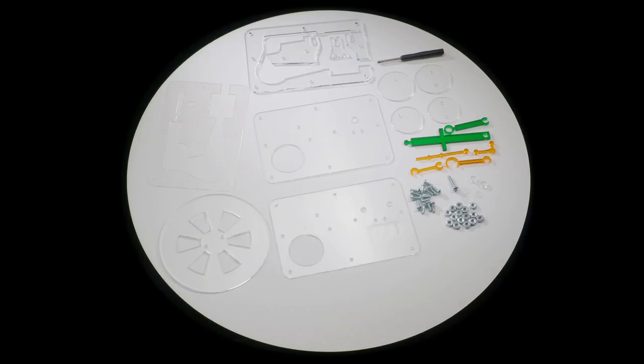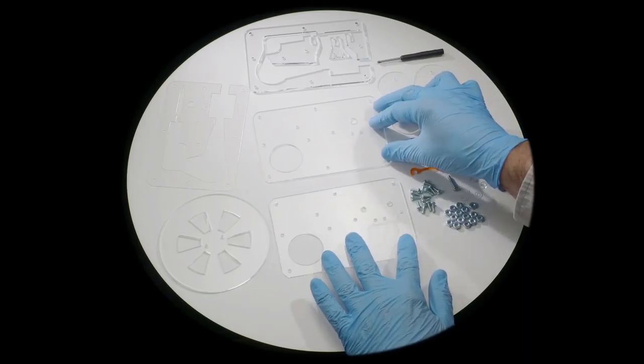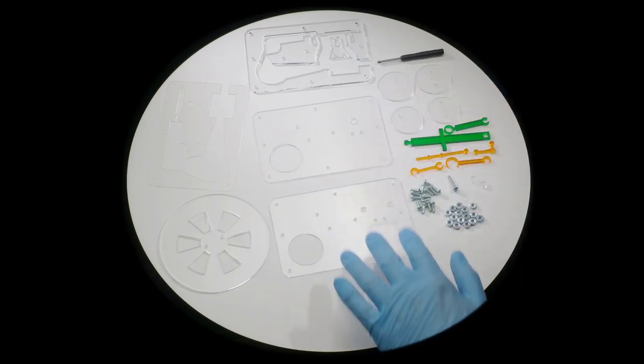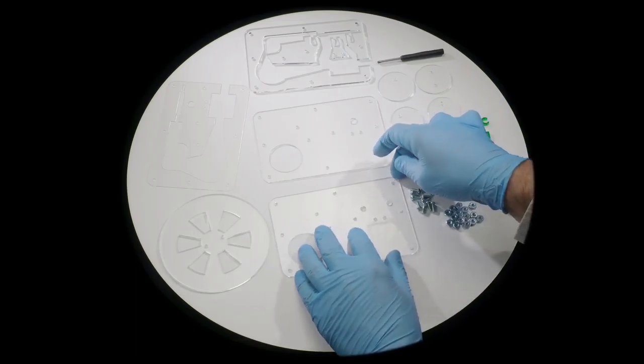We're going to assemble this steam engine model. We start by comparing these two top and bottom outer layers. This one has two larger holes, this one has just one larger hole. We want to start with the one with two larger holes.